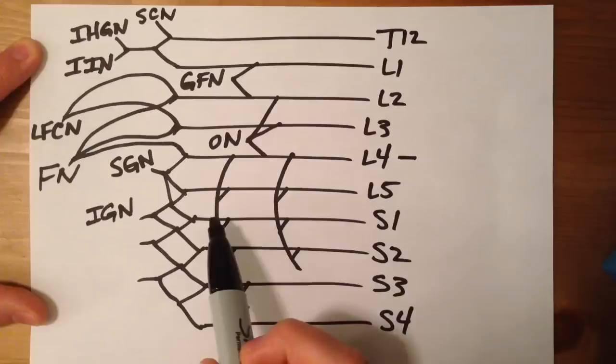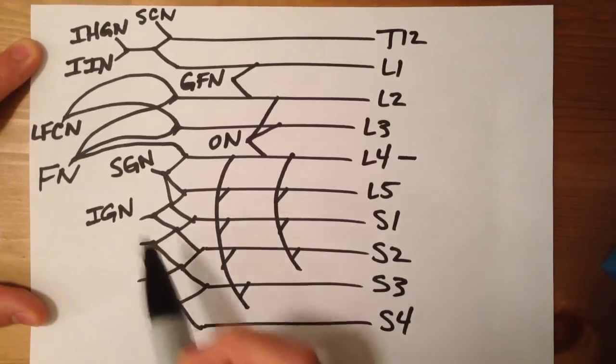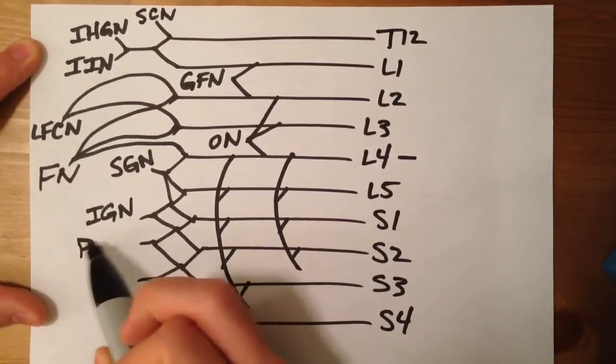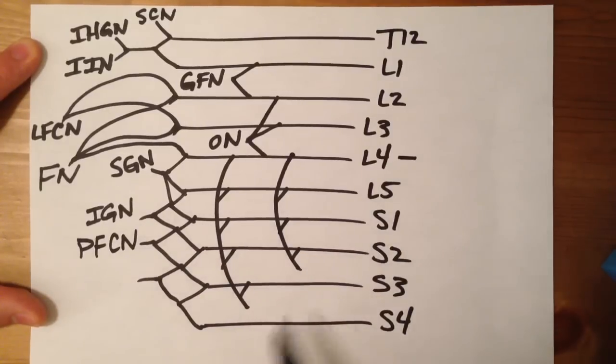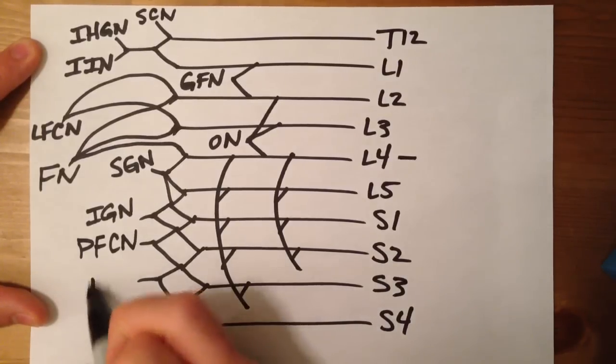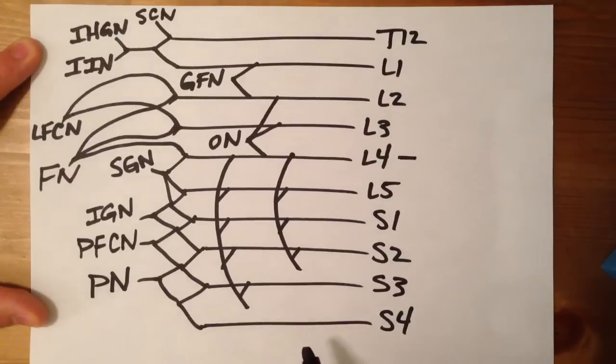Between S1 and S3, that is going to be your posterior femoral cutaneous nerve. And between S2 and S4, that's going to be your pudendal nerve.